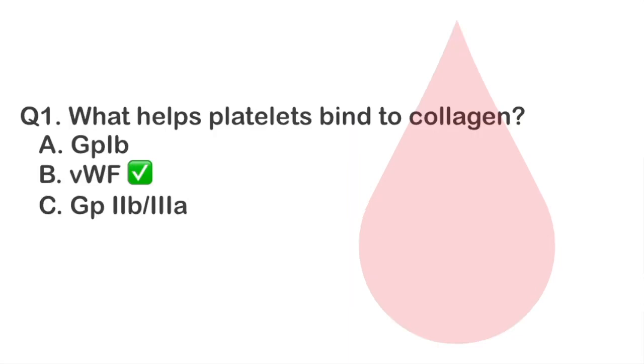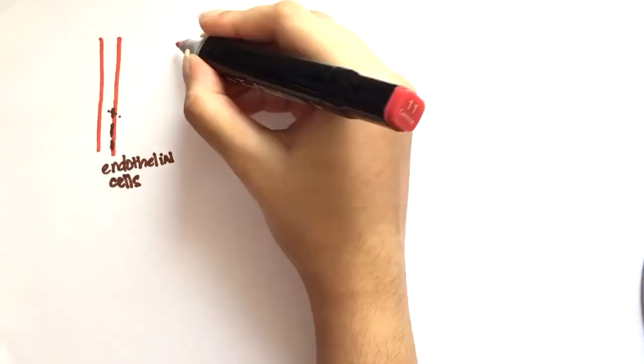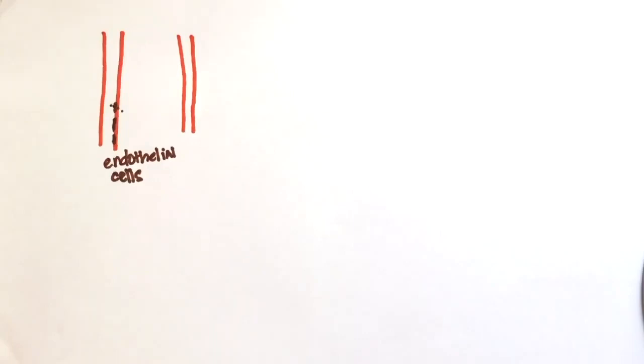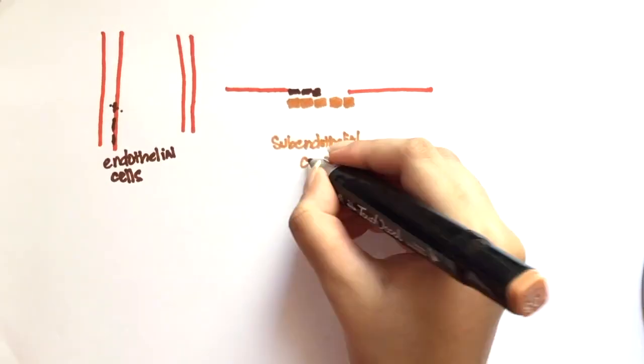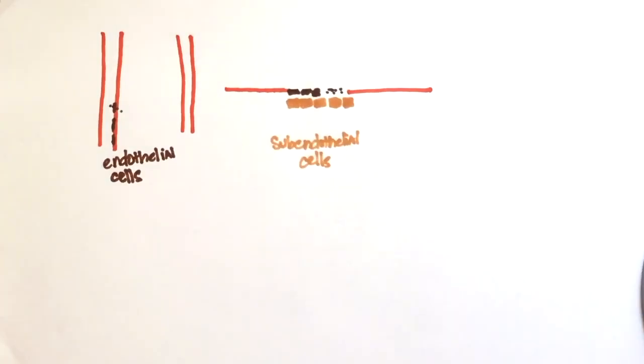The correct answer is von Willebrand factor. Endothelial damage kick-starts the clotting process. The blood vessels undergo transient vasoconstriction. Since endothelial layer is damaged, it exposes the subendothelial layer right below it.